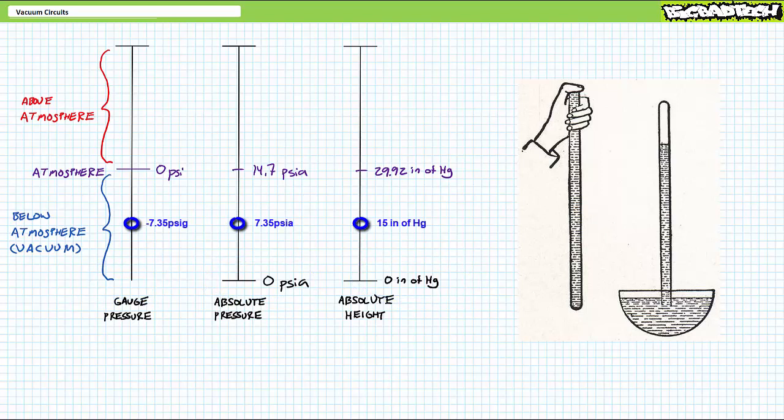Halfway up, i.e. 7.35 psi absolute, or if you had special affection for the gauge scale, negative 7.35 psi gauge, the atmosphere would support a column of mercury halfway up the tube, or roughly 15 inches. As archaic as this absolute height measurement is, you can see how it works, and you'd think people would just run with this, right? Wrong.